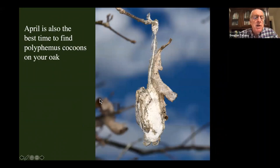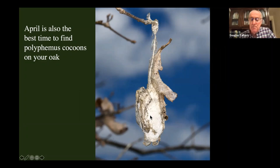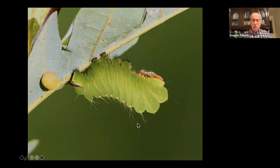April is also the best time to find Polyphemus cocoons on your oak. After the marcescent leaves fall, you can see the cocoons very clearly — they're pretty large and silvery. What they contain is one of the giant silk moths, the Polyphemus moth.